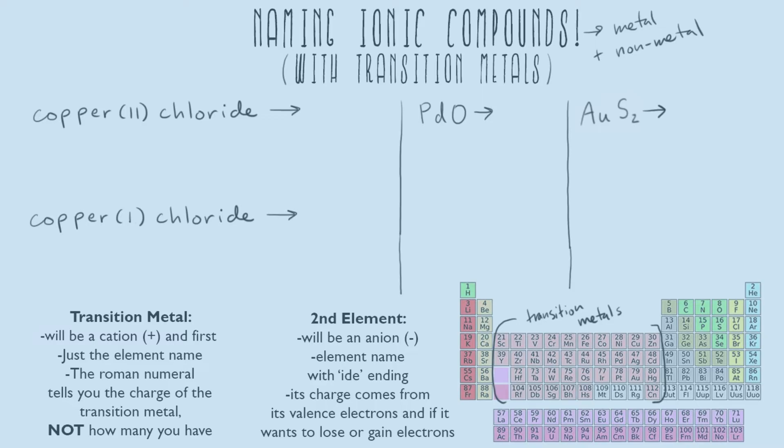The reason we need Roman numerals for these is because these are the elements we cannot predict the valence electrons for — it's not always the same. For everything else, we can always predict the ion that things are going to form. But transition metals can have different valence electrons depending on what circumstances they're under. So we have to be told with the Roman numeral how many valence electrons this particular transition metal has at this time.